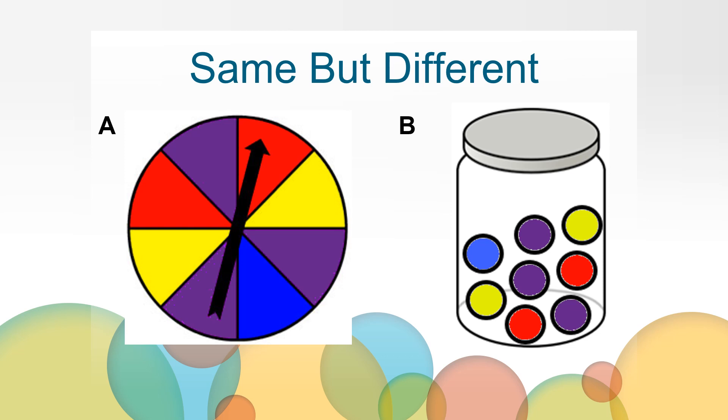You may have noticed that they are different because one is a spinner and the other is a jar of marbles. You may have also noticed that the arrow of the spinner has landed on red, but no marble has been picked out of the jar.